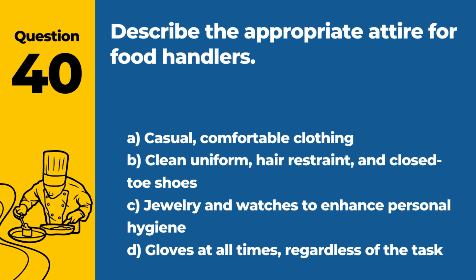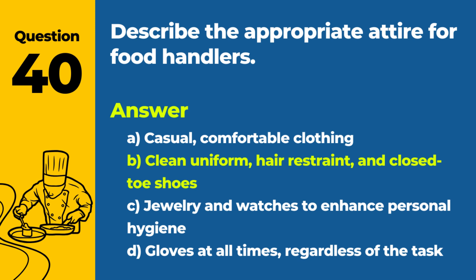Question 40: Describe the appropriate attire for food handlers. a. Casual, comfortable clothing. b. Clean uniform, hair restraint, and closed-toe shoes. c. Jewelry and watches to enhance personal hygiene. d. Gloves at all times, regardless of the task. Answer: b. The appropriate attire for food handlers includes a clean uniform, a hair restraint such as a hairnet or hat, and closed-toe shoes to maintain hygiene and safety in the kitchen.